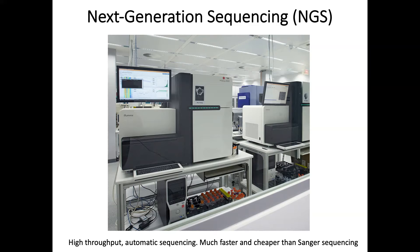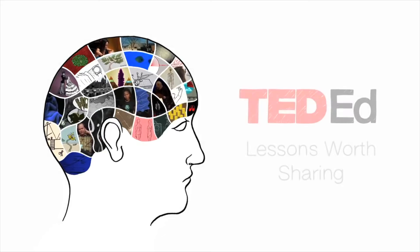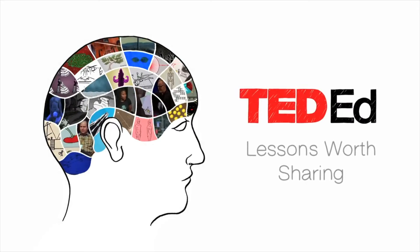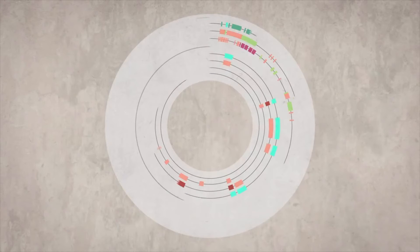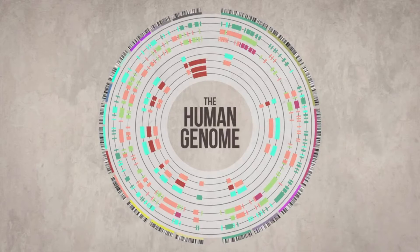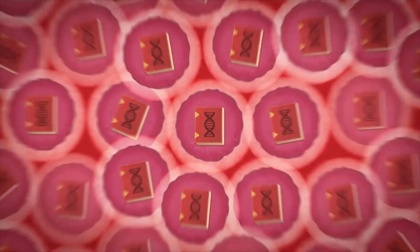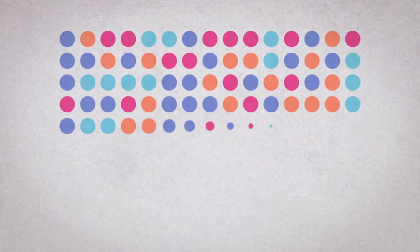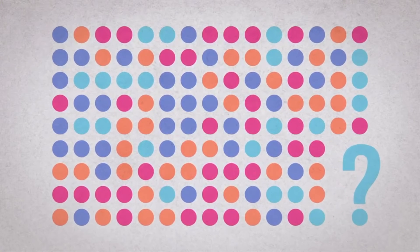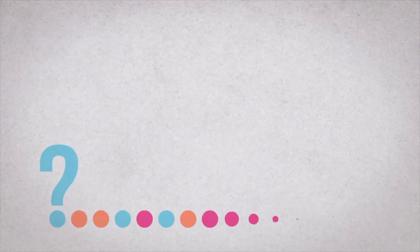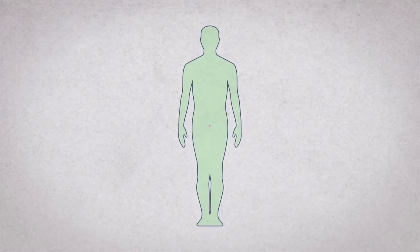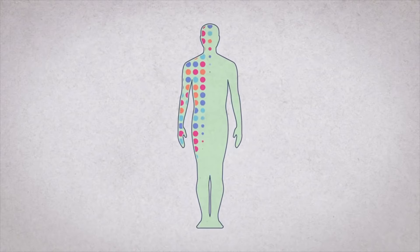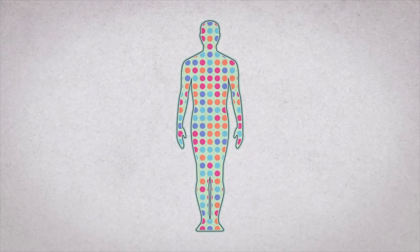You've probably heard of the human genome — the huge collection of genes inside each and every one of your cells. You probably also know that we've sequenced the human genome. But what does that actually mean? How do you sequence someone's genome? Let's back up a bit. What is a genome?